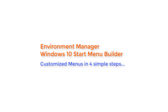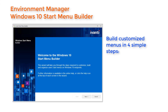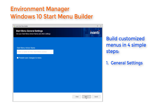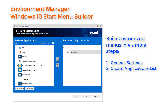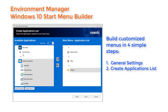In Environment Manager you can now use the Windows 10 Start Menu Builder to quickly create a personalized Start Menu as a logon action. Saved as part of the configuration, it is applied to whichever user groups you specify. You can name the action or accept the default file name, and you control whether users can edit the deployed menu or not. You can create as many different start menus and configurations as your business requires, and you can edit and update them in seconds.